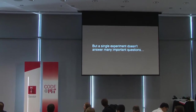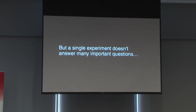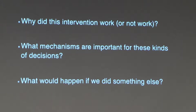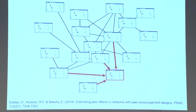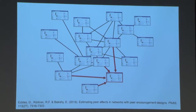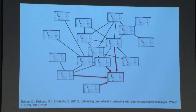But a single experiment often doesn't answer the important questions you might have as a decision maker or scientist. You might wonder: why did a particular intervention work or not work? What are the mechanisms that are important for a whole family of interventions — for example, a recommendation system or the Facebook news feed? We asked: what are the effects on users receiving additional feedback — likes and comments from peers when they post content?